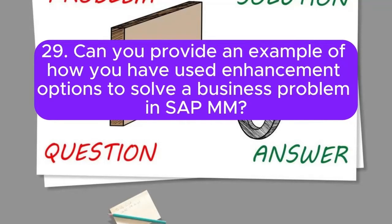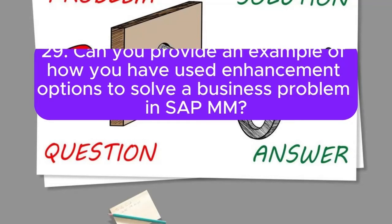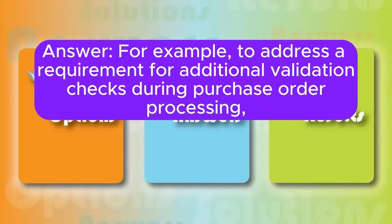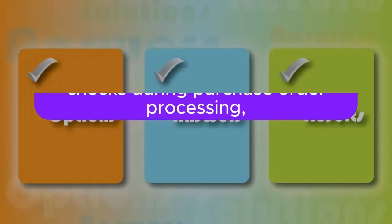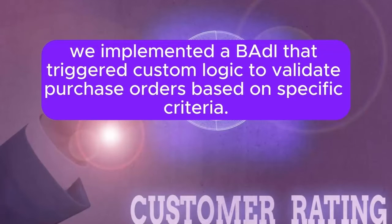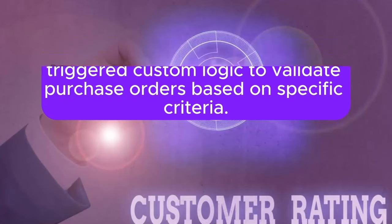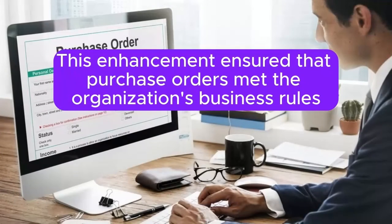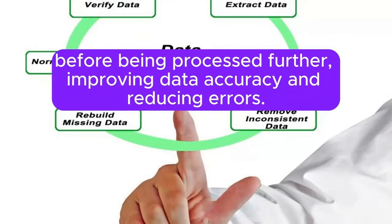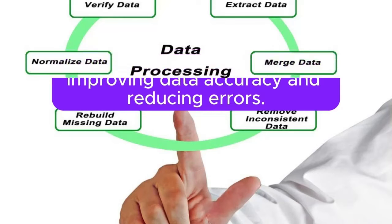Can you provide an example of how you have used enhancement options to solve a business problem in SAP MM? For example, to address a requirement for additional validation checks during purchase order processing, we implemented a BAdi that triggered custom logic to validate purchase orders based on specific criteria. This enhancement ensured that purchase orders met the organization's business rules before being processed further, improving data accuracy and reducing errors.